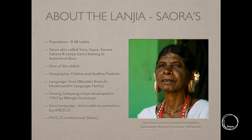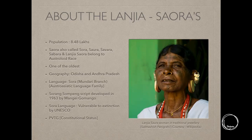The Lanjia Saura are considered among the aborigines of Odisha and Andhra Pradesh. Their language is called Sora, which belongs to the Mundari branch of the Austro-Asiatic language family. The Sora language has been termed vulnerable to extinction by UNESCO. Their constitutional status is PVTG — Particularly Vulnerable Tribal Group — so they are under significant threat.